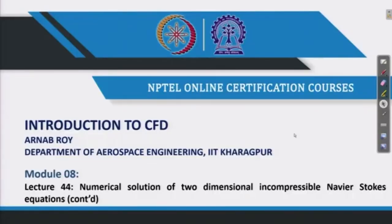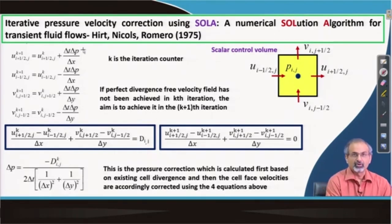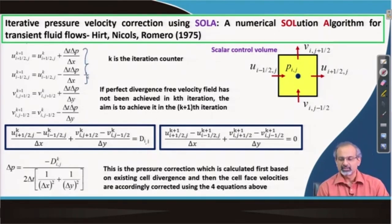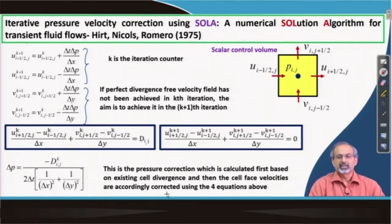In this lecture, we will complete our discussion on two-dimensional incompressible Navier-Stokes equations. In the previous lecture, we had started the discussion on the iterative pressure-velocity correction using the SOLA algorithm, and we had already discussed how the U component of velocities on the east and west faces of the scalar control volume are corrected. Similar strategies are used for calculating the k+1th iteration level values of v at the north and south faces of the control volume.